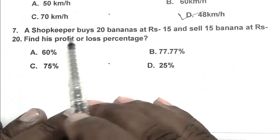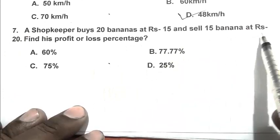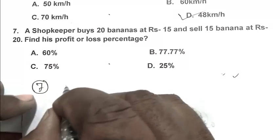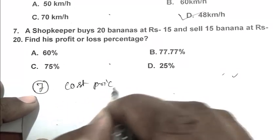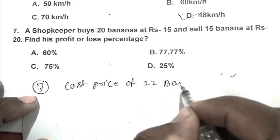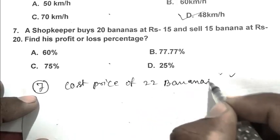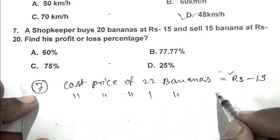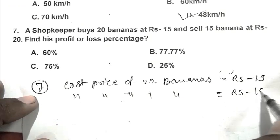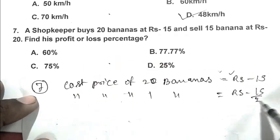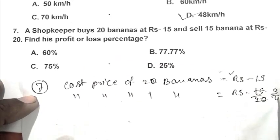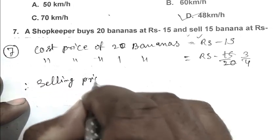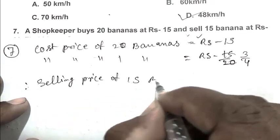Question number 7: A shopkeeper buys 20 bananas at Rs. 15 and sells 15 bananas at Rs. 20. Find his profit or loss percentage. Cost price of 20 bananas is Rs. 15. Cost price of 1 banana is Rs. 15 by 20, that is 3 by 4.